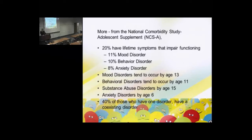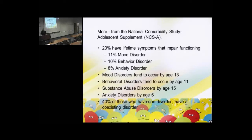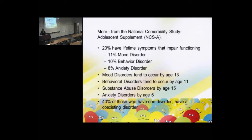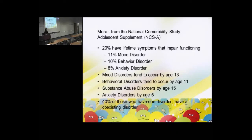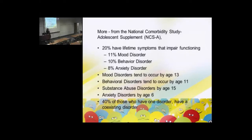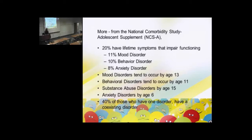To complicate things even more, of those students who have one disorder, 40% of them have a comorbidity — a coexisting disorder of some sort. So that might be ADHD, but they develop depression, or that might be depression but they develop a substance abuse disorder. It can take all sorts of forms.